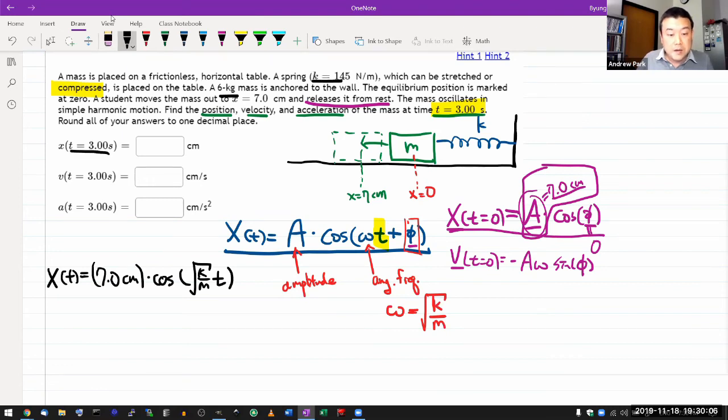All the numbers inside this argument will work out to be unitless numbers, technically units of radian. Plug in the numbers, you'll get x. For velocity, you just take the derivative, the derivative of position as a function of time. One factor of omega comes out and I get minus 7.0 centimeters square root of k over m sine of square root of k over m times t. And plug in t equals 3 seconds to get the answer.